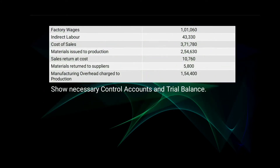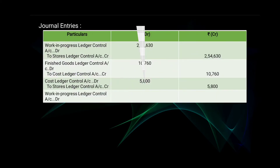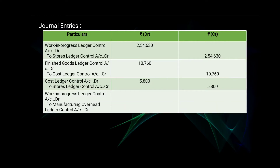Next, manufacturing overhead charged to production; the amount is 1,54,400. The journal entry will be: Work in Progress Ledger Control Account debit, to Manufacturing Overhead Ledger Control Account — amount 1,54,400 on the debit and on the credit side.